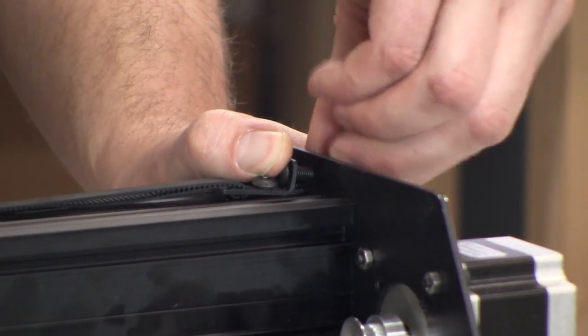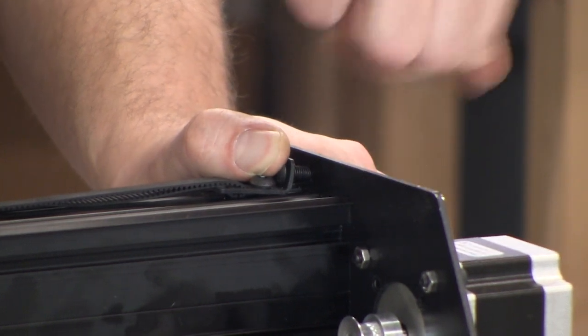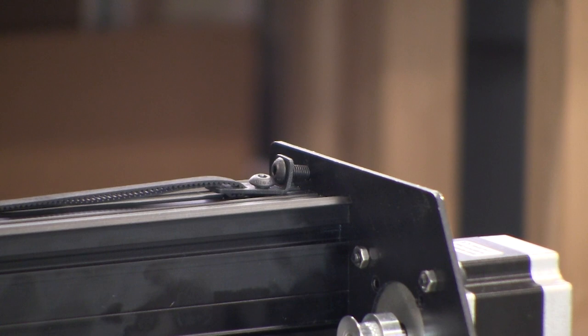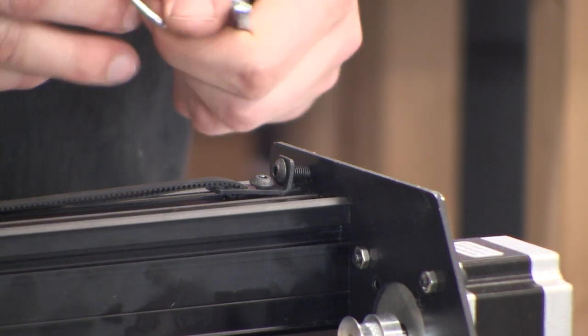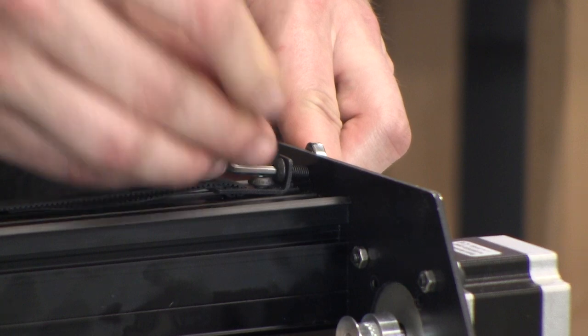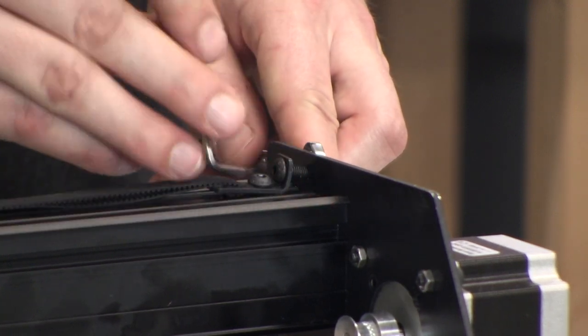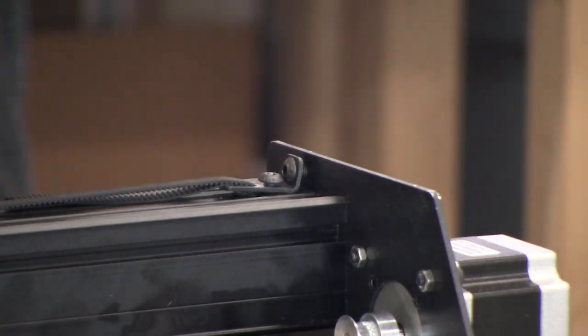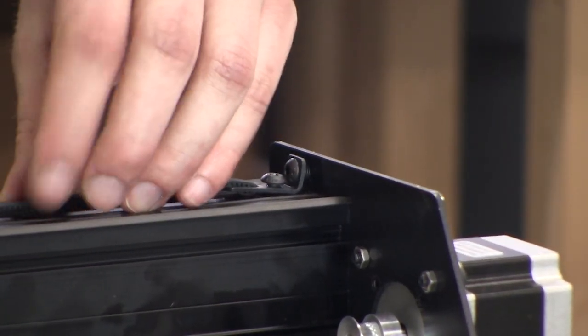Next, feed the long screw through the corresponding hole of the Y motor mount plate, and add the nut on the outside. You can tighten the long screw and the nut in order to tension the belt. When you've tightened the belt enough, it should be taut like a guitar string.